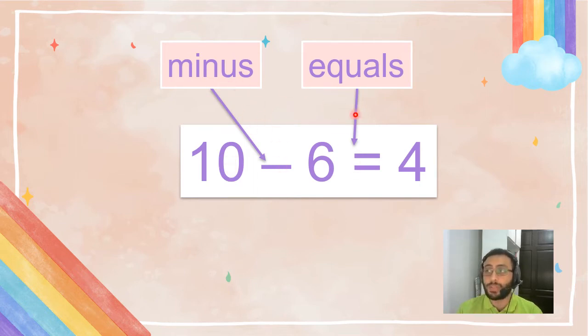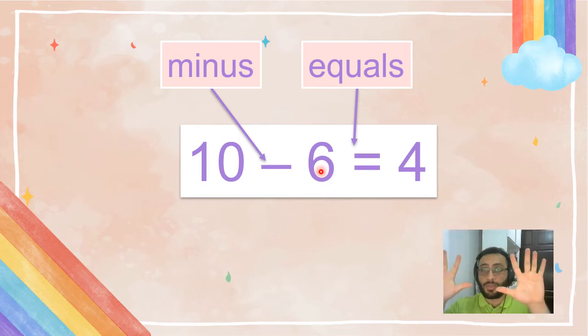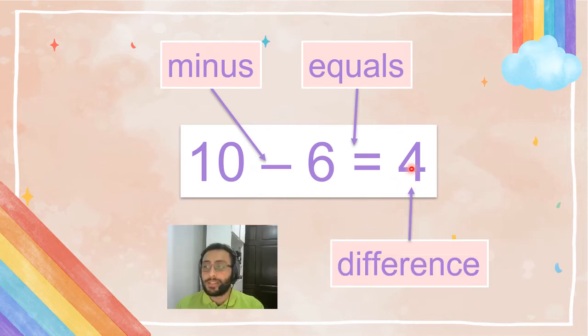Now what is subtraction? It has two symbols: minus, that can look like this or this, and equals. You already know about this one. So this one is called minus, as you remember, and this one is equals. So we can easily read this: 10 minus 6 equals 4, right? 10 minus 6—you have 10, you say bye-bye to 6. How many do you have? Only 4 now.